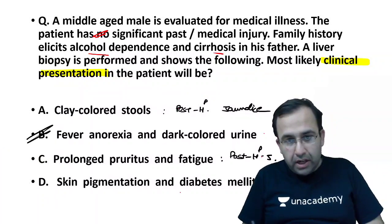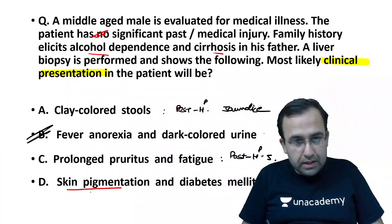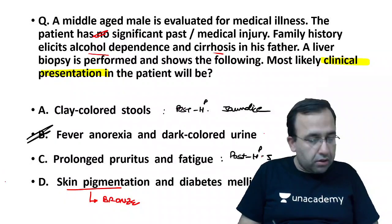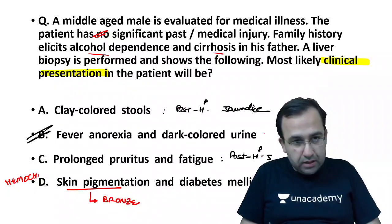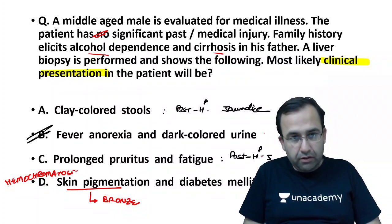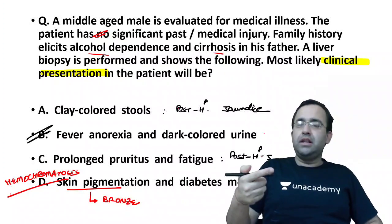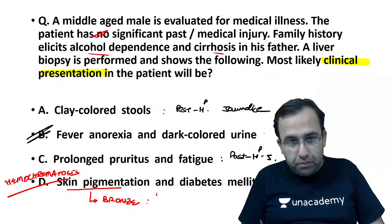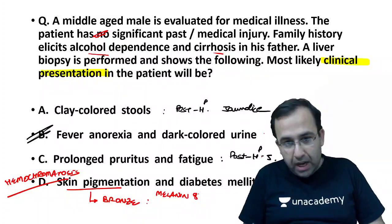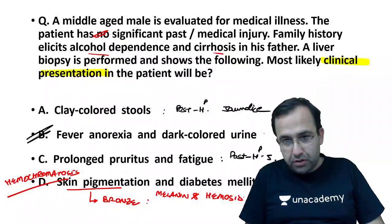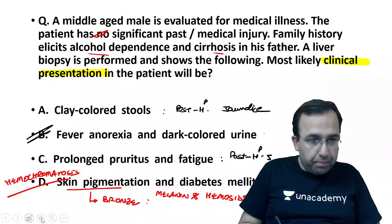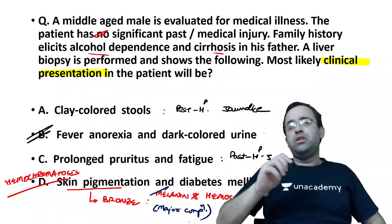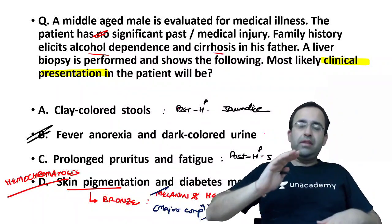Option D — skin pigmentation and diabetes — also called bronze diabetes. This skin pigmentation is of bronze color and is associated with hemochromatosis. Another question asked here is why this bronze color comes in the patient — which is the main pigment associated. This bronze color is because of both melanin and hemosiderin. But the major component is melanin. Do not go wrong and say hemosiderin; the major component is melanin.